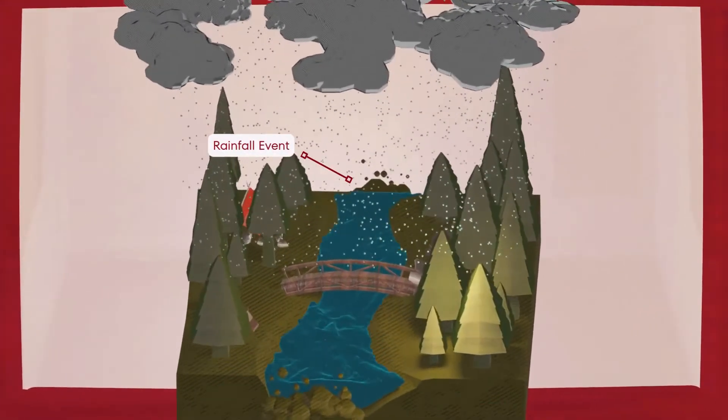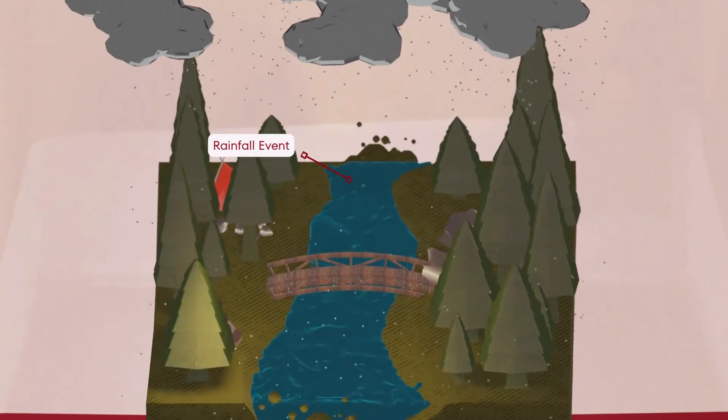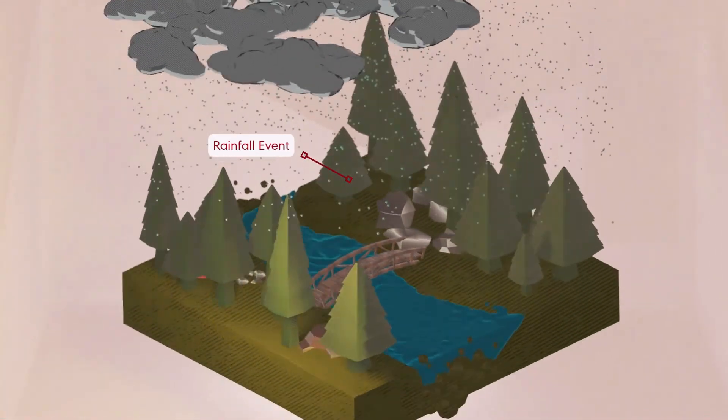A flood hydrograph is a graph that shows river discharge, the volume of water flowing, over time after a rainfall event.